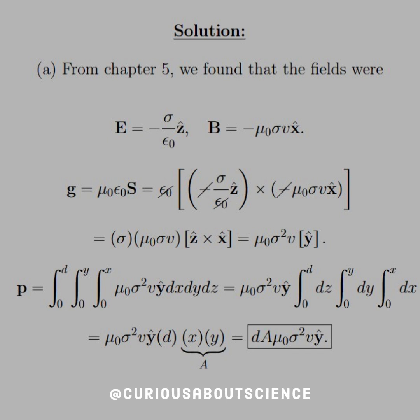And so if we look for the momentum density, all we've got to do is take the cross product of E and B now, multiplying through by mu not and epsilon not accordingly. What we see here is that the mu nots cancel from the Poynting vector, and the epsilon nots cancel. The two negative signs on the E and B fields cancel. And we see that we can factor out the constants, and thus we have the cross product of z cross x hat. And once we simplify that down, you get mu not sigma squared v in the y hat direction.